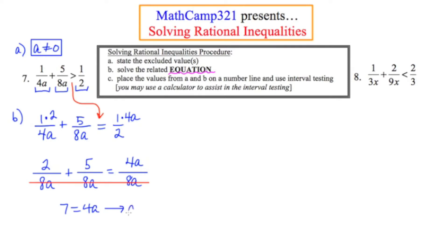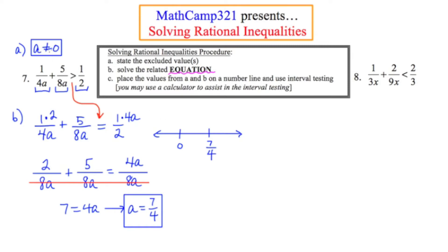That means A is equal to 7 fourths. Now I take the two answers from parts A and B and put them on a number line — placing 0 and 7 fourths (which is 1 and 3 fourths). Since A cannot equal 0, that point gets an open circle. To determine whether 7 fourths is open or closed, I go back to the original problem — the inequality does not have an equal sign, so that point is also open.